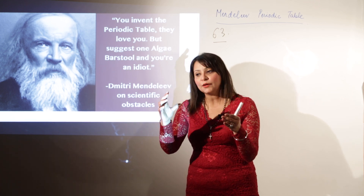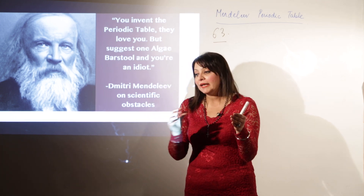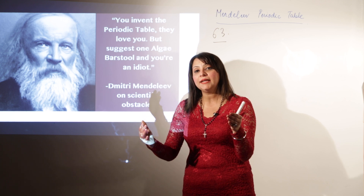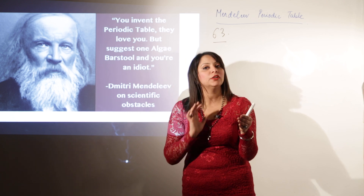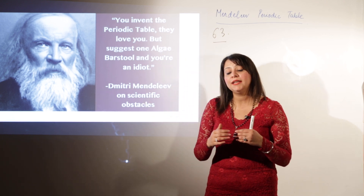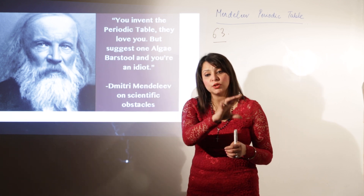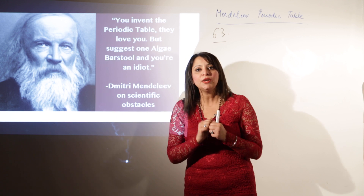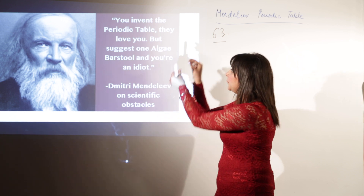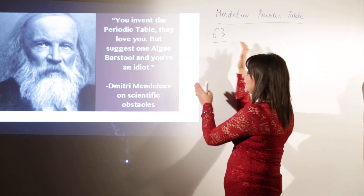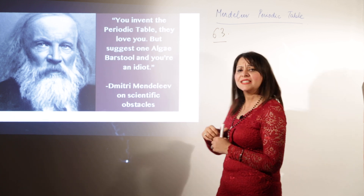He wrote the physical properties and the formula of the hydride and oxide for all 63 elements on 63 different cards. Then he pinned all 63 cards on the wall, and started sorting out the cards with similar properties — for example, noting that one metal was hard and another was slightly less hard.